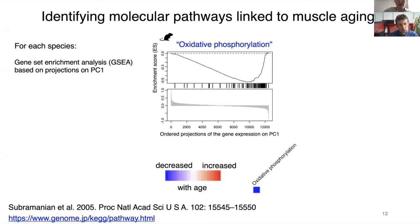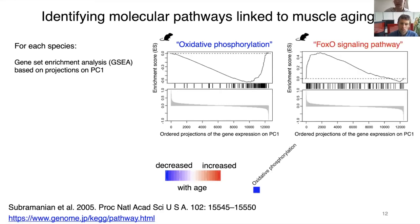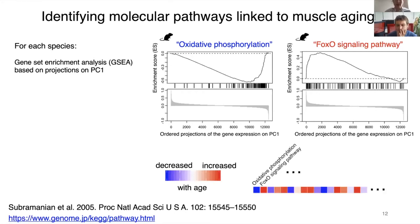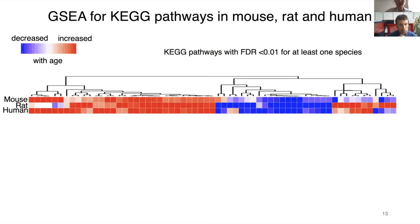If a pathway was highly enriched on the negative or positive side, I translated the enrichment into a color code. For example, oxidative phosphorylation is enriched with genes that decrease expression during aging, while the FoxO signaling pathway is enriched with genes that increase expression during aging. I performed this procedure for all available pathways and all genes, then kept only those pathways significantly enriched in at least one species and subjected them to hierarchical clustering.